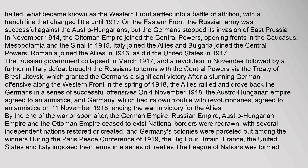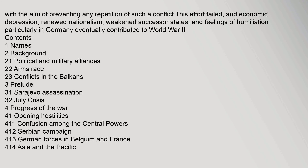By the end of the war, the German Empire, Russian Empire, Austro-Hungarian Empire, and the Ottoman Empire ceased to exist. National borders were redrawn, with several independent nations restored or created, and Germany's colonies were parceled out among the winners. During the Paris Peace Conference of 1919, the Big Four — Britain, France, the United States, and Italy — imposed their terms in a series of treaties. The League of Nations was formed with the aim of preventing any repetition of such a conflict. This effort failed, as economic depression, renewed nationalism, weakened successor states, and feelings of humiliation, particularly in Germany, eventually contributed to World War II.